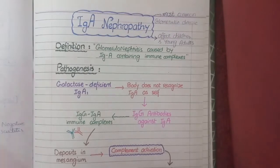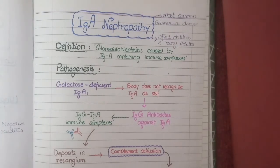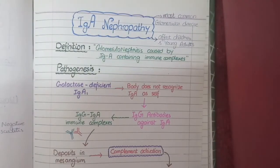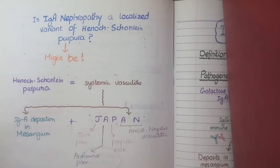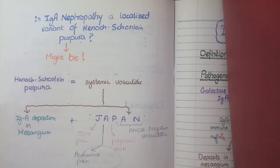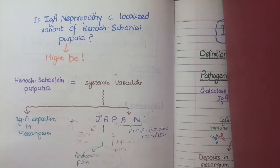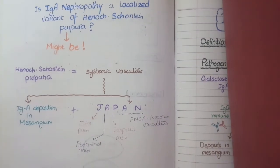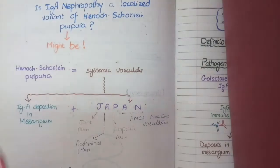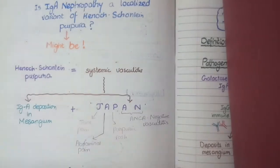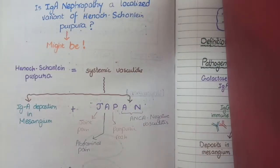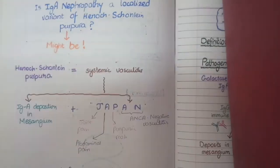Before moving to the pathogenesis of IgA nephropathy, there is one additional concept to learn. Some experts believe that IgA nephropathy is a localized variant of Henoch-Schönlein purpura (HSP). HSP is a systemic vasculitis characterized by IgA deposition in the mesangium, just like IgA nephropathy. But as HSP is a systemic disease, it has additional features beyond mesangial deposition.